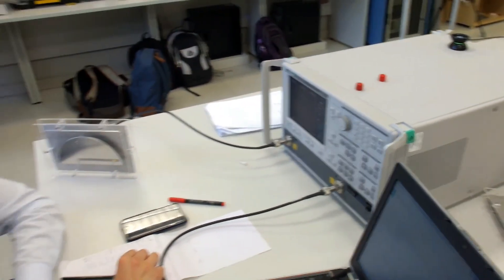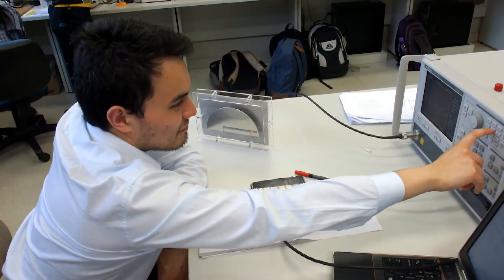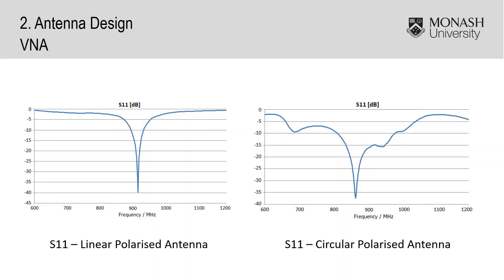The antennas were tested using the vector network analyzer. Here, the S11 parameter of each antenna was obtained. The antenna gain was also tested using a horn antenna inside the anechoic chamber.